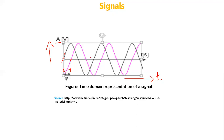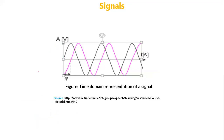The frequency of the signal is one divided by T, the period of one cycle. If one cycle takes X amount of time, the frequency is 1/X. In this diagram, the frequency appears the same for all cycles, but in reality it need not be — the frequency of the signal may vary with time. Representing the signal in the time domain can be problematic, especially if the signal contains many different frequencies.